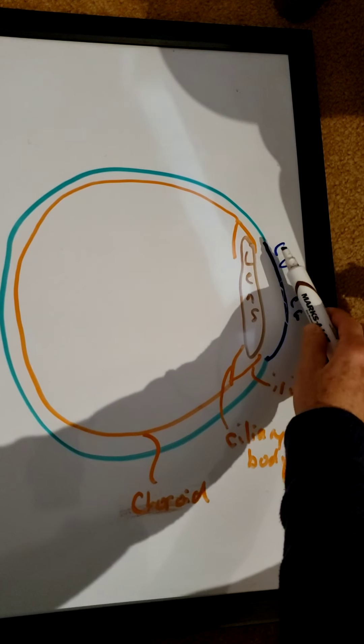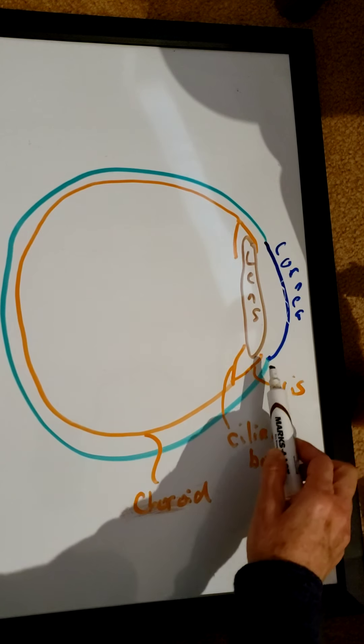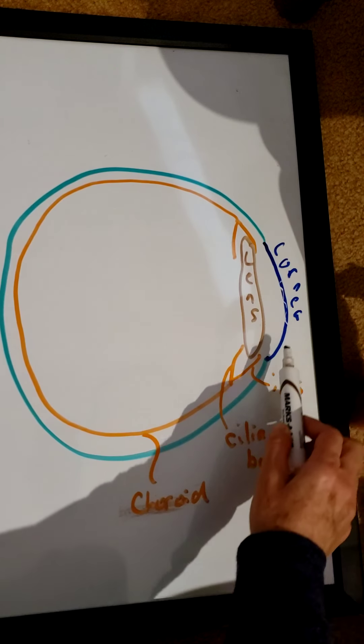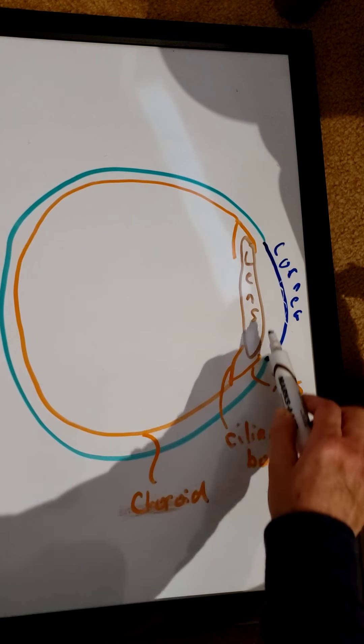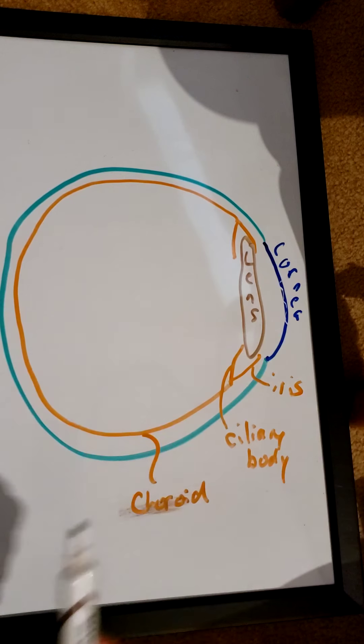So don't confuse the cornea and the lens. The cornea is the clear bulge at the front of your eye, and then the lens is back in here. The lens changes shape, the cornea does not.